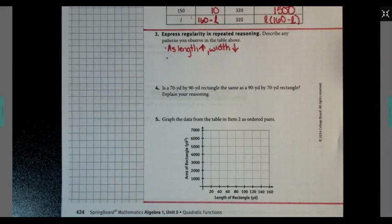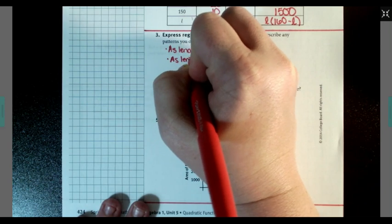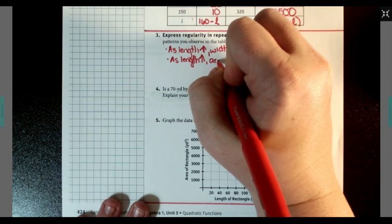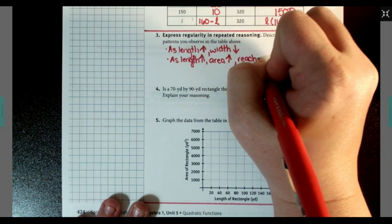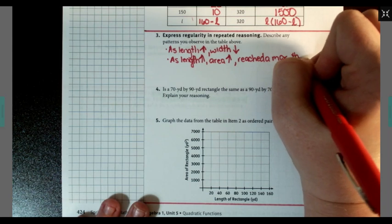Next note, as the length increased, the area increased and then suddenly started to decrease. As length increased, area increased, reached a max, then started to decrease.